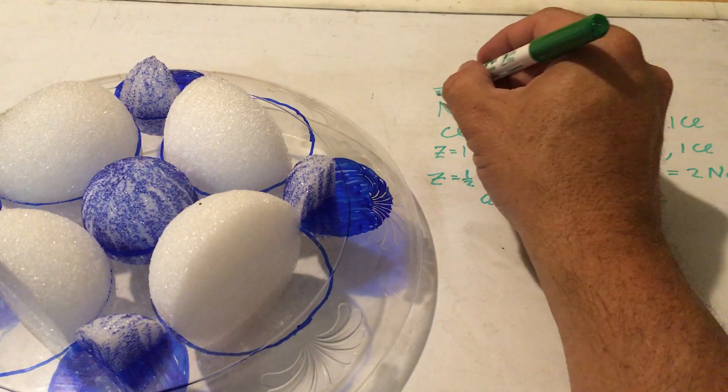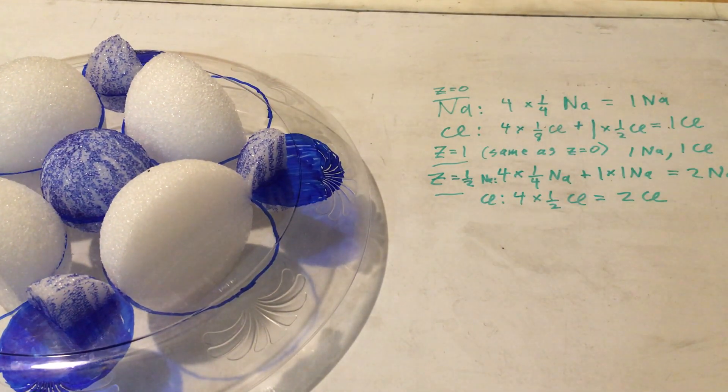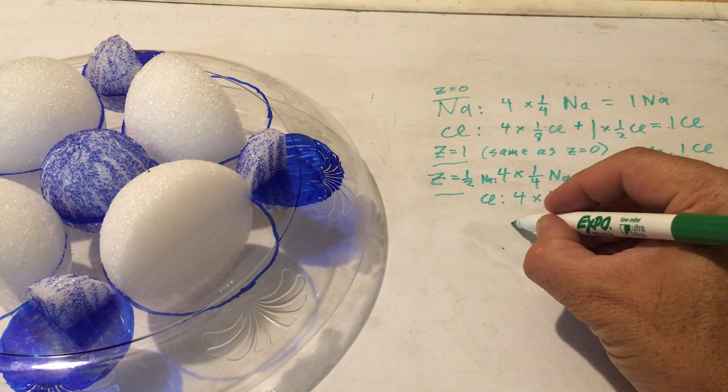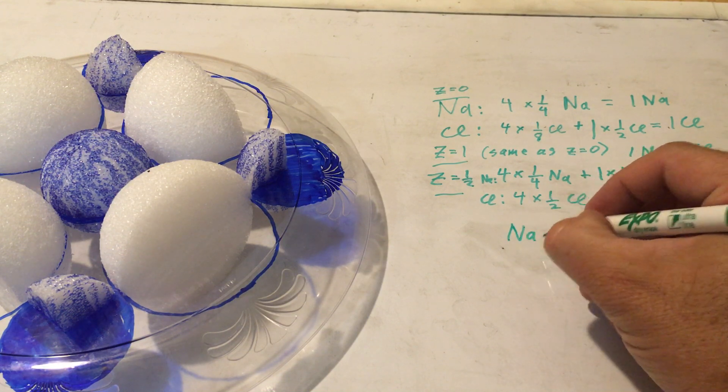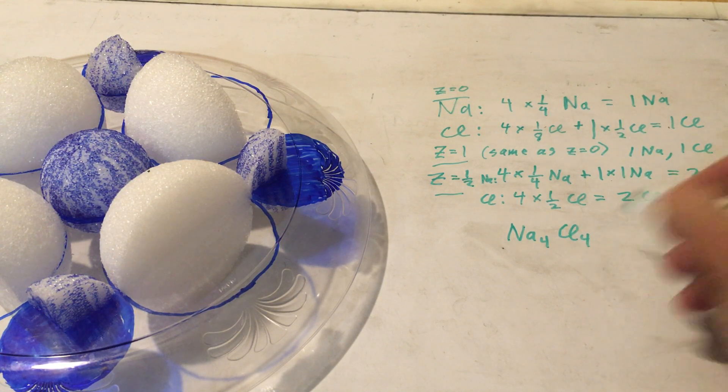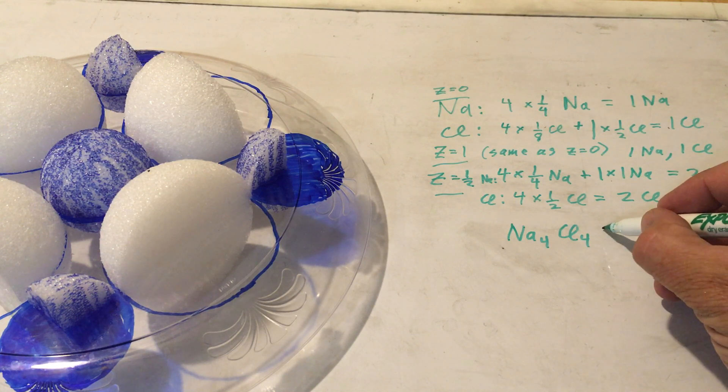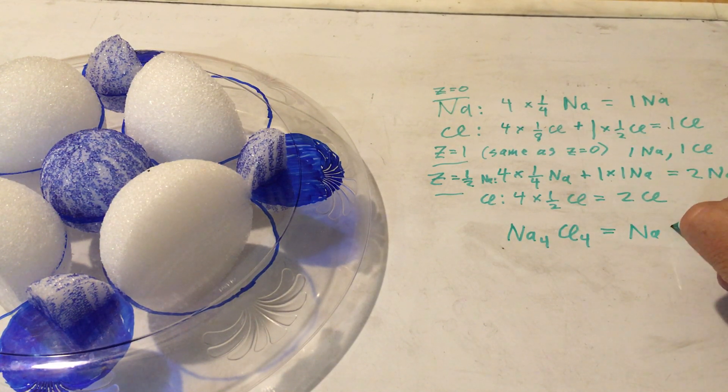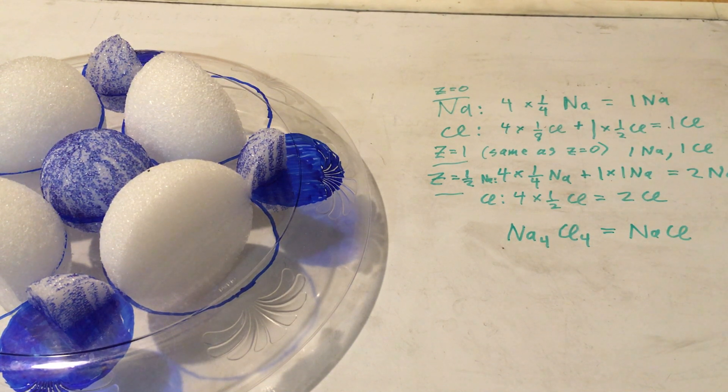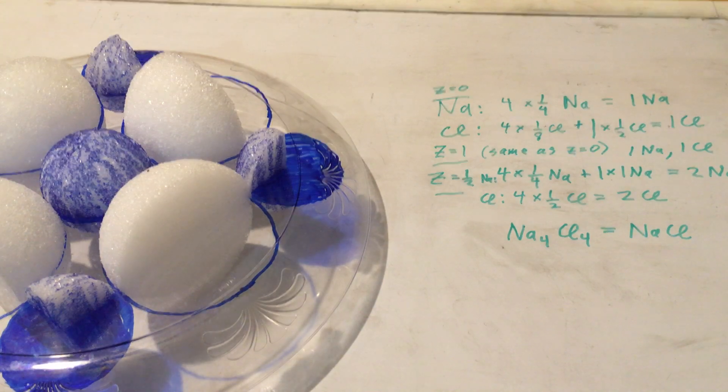So adding this all up for the z equals zero, the z equals one, and the z equals one half, what I have are four sodium ions and four chloride ions. And simplifying this down to the smallest whole number ratio, we get NaCl, which we all know is a formula for sodium chloride. All right, so that's the interconnection between the structure of the unit cell and the stoichiometry of the ions in the sodium chloride.